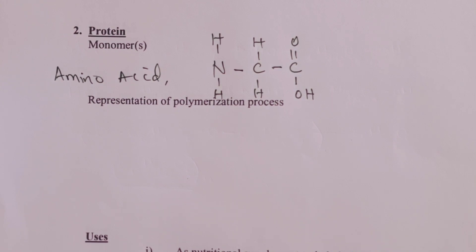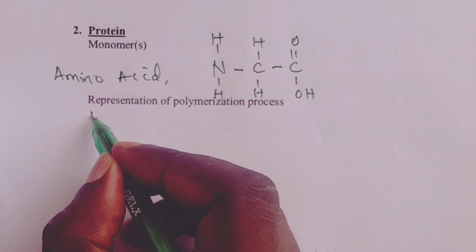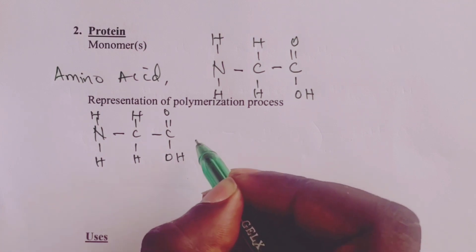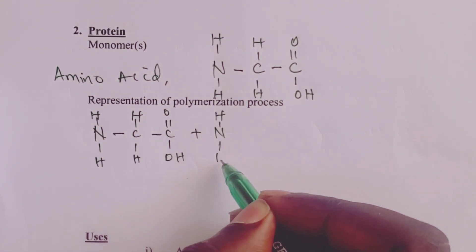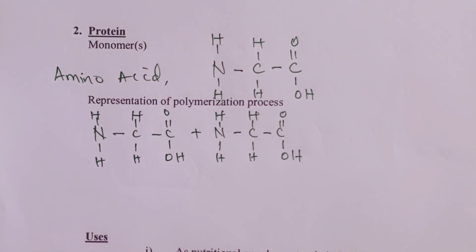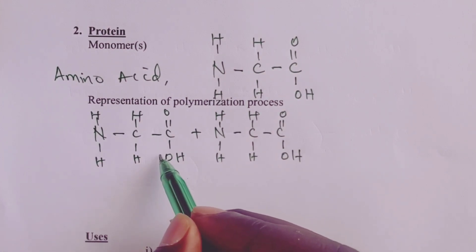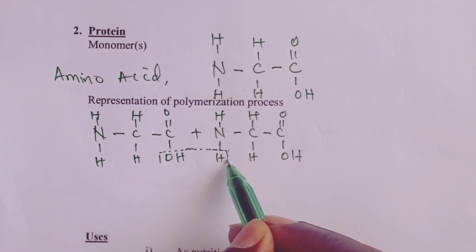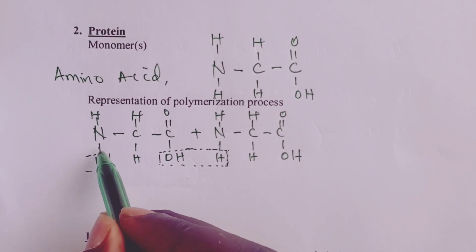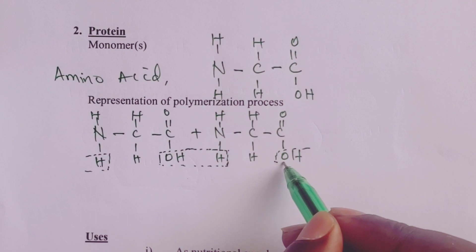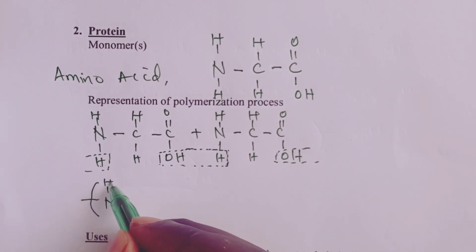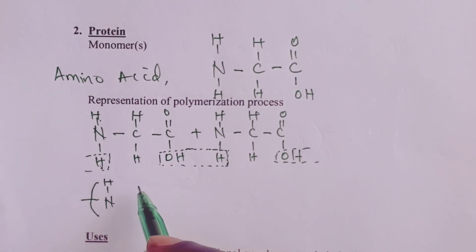Let us illustrate how the polymerization process takes place. We shall use two molecules of our monomer. We have the first one linking with the second one, just for illustration purposes, though we know that to make protein you need millions of these monomers. The OH terminal of the first molecule reacts with the H of the second molecule to form water. The same situation happens with the first H of the first molecule and the last OH of the second molecule.